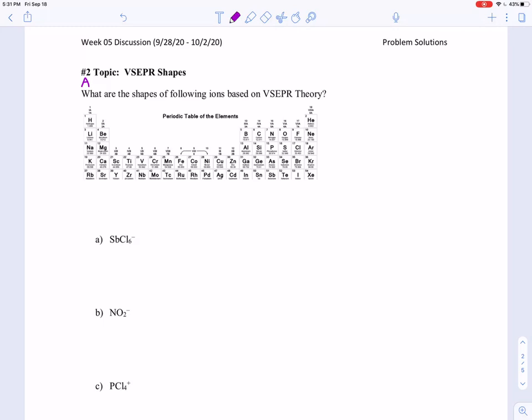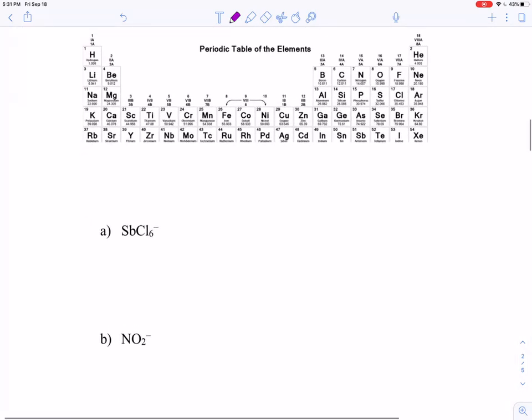Okay, so let's look at this, the first molecule, which is antimony in the center, and we're surrounded by 6-chlorine with a negative charge. So where's antimony? It's right here. This is in the fifth column.